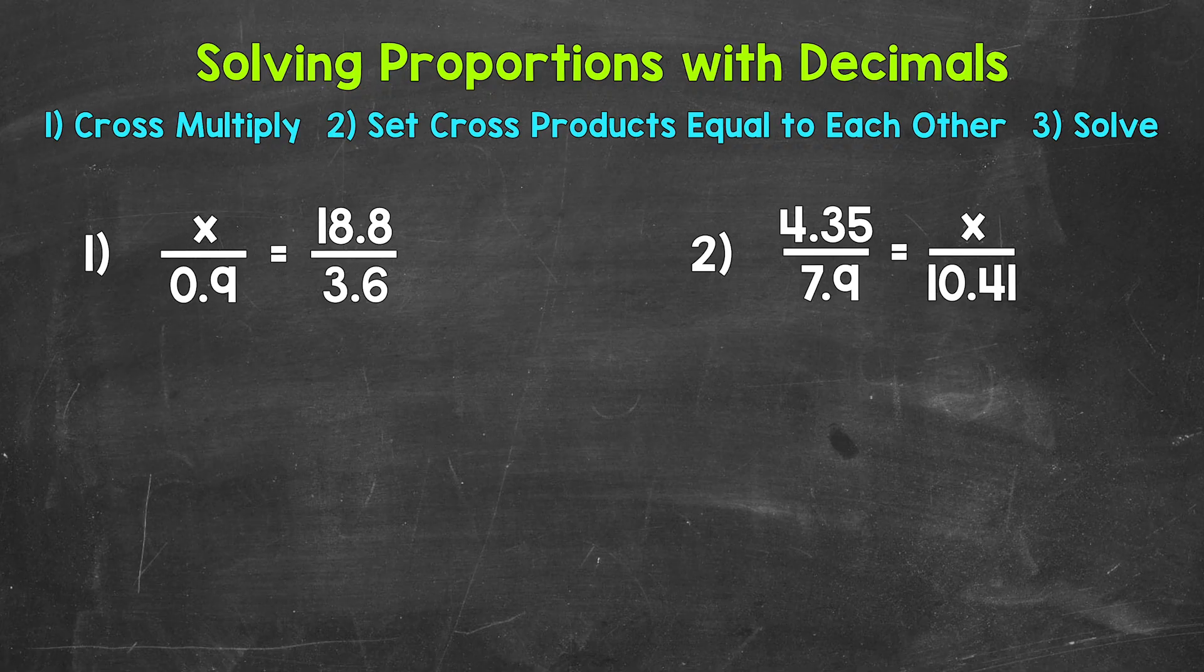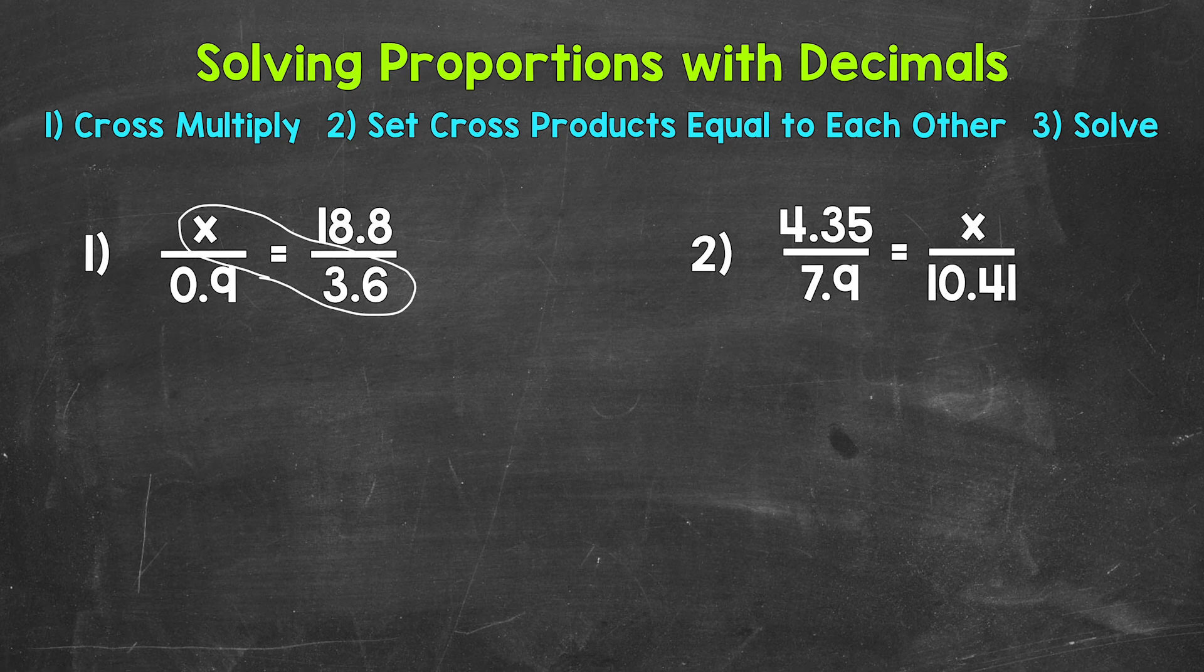Let's start by cross-multiplying, so multiplying diagonally. First, we'll do x times 3 and 6 tenths. We can write this as 3 and 6 tenths x.